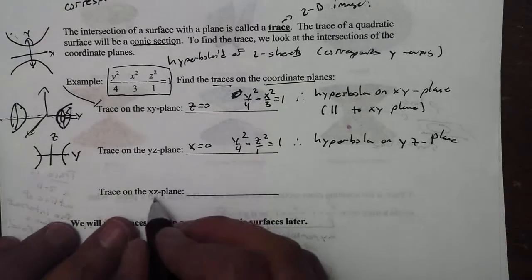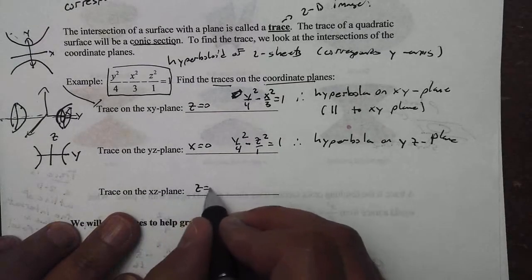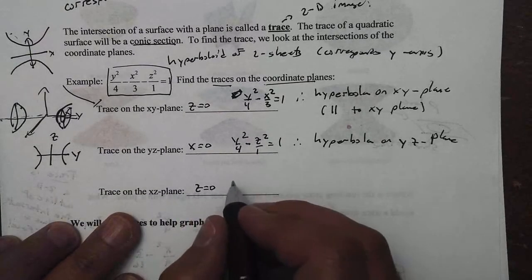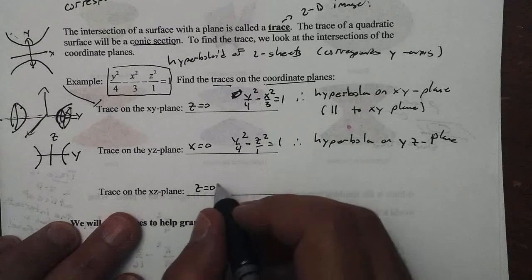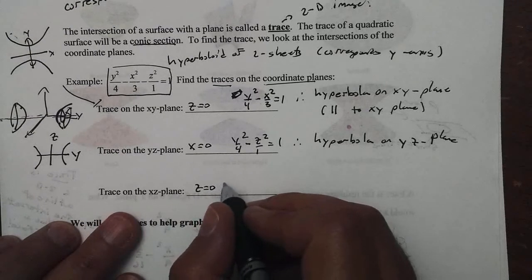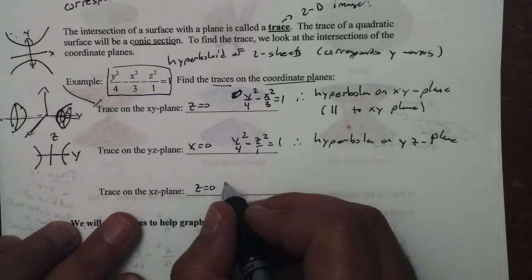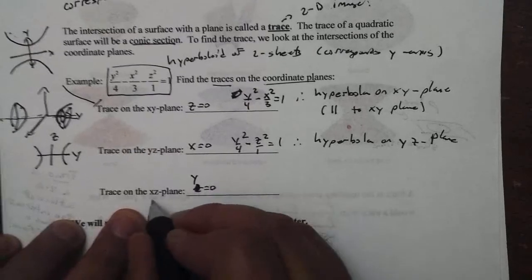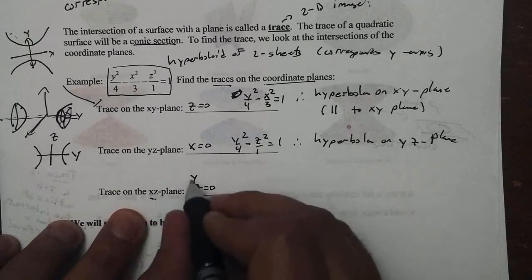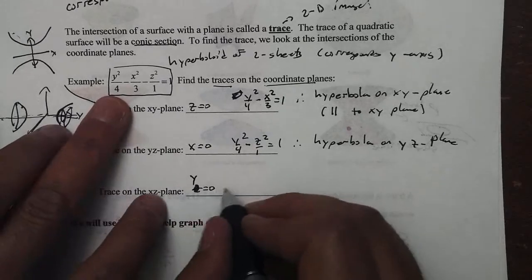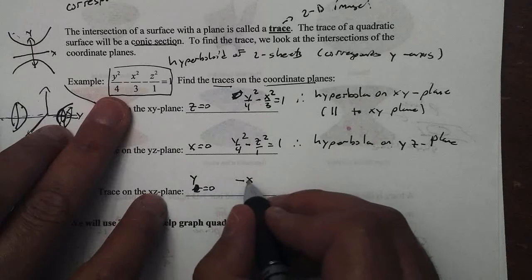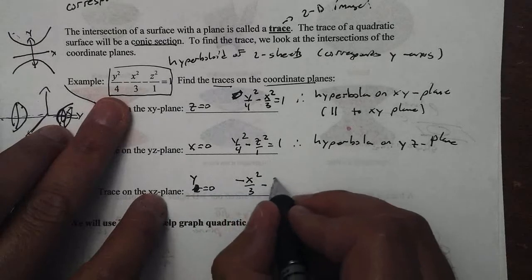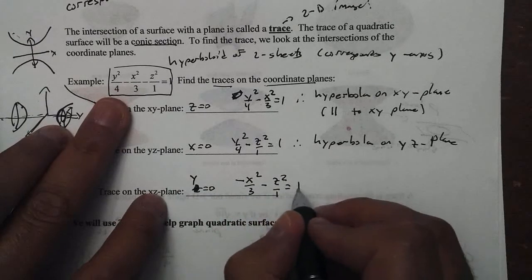If I want to find the trace on the xz plane, we let z equal 0. And if we let z equal 0, we would get, I'm sorry, not z, that's silly of me. If we let y equal 0, sorry, remember which one's missing, xz plane, y is missing. If we let y be 0, I'm sorry about that, we would get negative x squared over 3 minus z squared over 1 equal to 1.